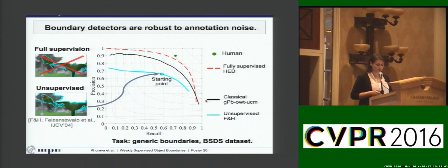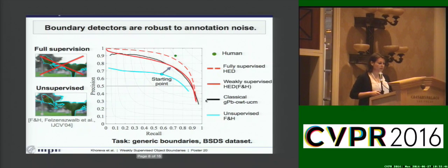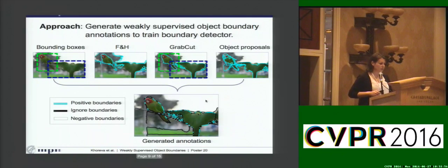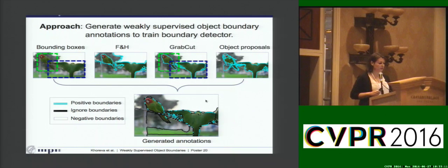Instead of using the ground truth, we propose to train the detector using noisy boundary estimates produced by this unsupervised method as our starting point. If we train the detector from this starting point, we are able to achieve a result comparable to the global probability of boundary method. Based on this observation, we propose to generate weakly supervised object boundary annotations by combining different sources such as detection bounding boxes, unsupervised image segmentation, GrabCut, and object proposals. We fuse these sources via intersection, where consensus between different methods is set to positive boundaries (light blue), non-consensus boundaries are set to ignore (black), and all the rest is set to negatives.